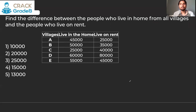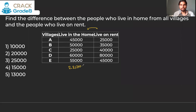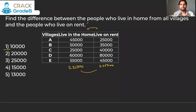Question 2: Find the difference between the number of people who live in homes from all villages versus on rent. The total for home is 2,35,000 and the total for rent is 2,25,000. The difference between these two is 10,000, so that is the answer.